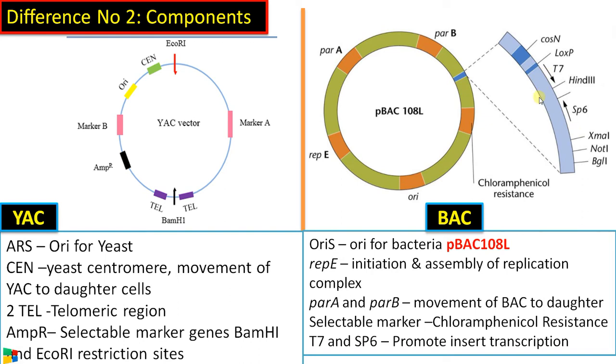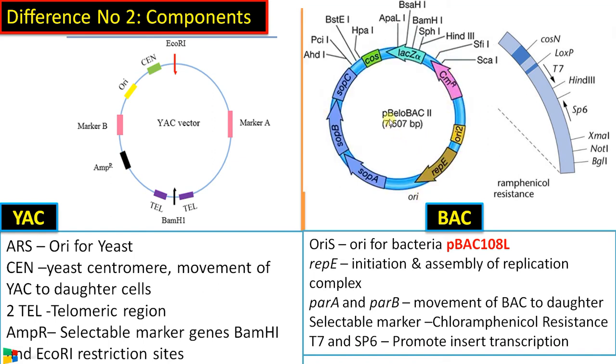So these are the basic components of BAC vector and now we have many BAC vectors available that are modified based on the requirement. So this is a modified BAC vector which is called as pBeloBAC11. There are many other sequences like there is a LacZ region for the selection of transformed colonies. Then there is a cos site, etc.